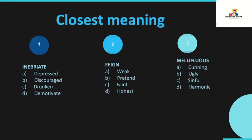We are going with some closest meaning or similar meaning — you can say synonyms. The very first word is 'inebriate,' which means option C: drunken. The next word is 'pain,' and its similar meaning or closest meaning word is option B: pretend.